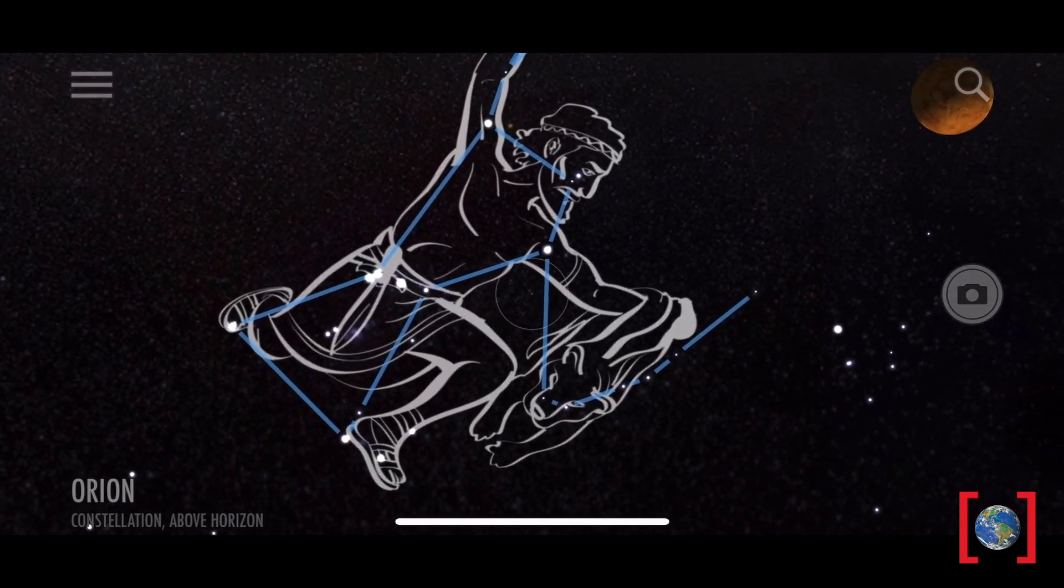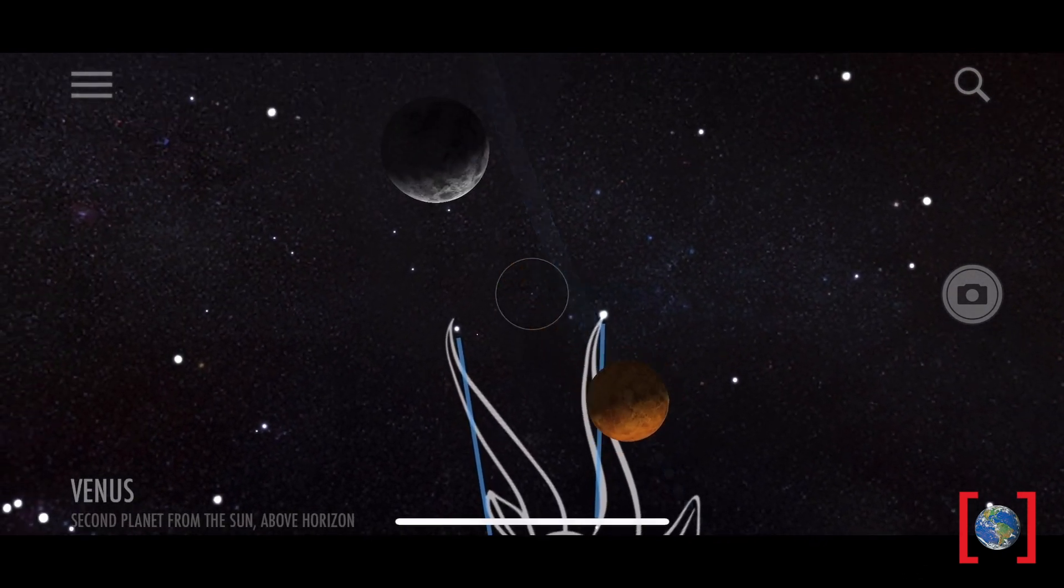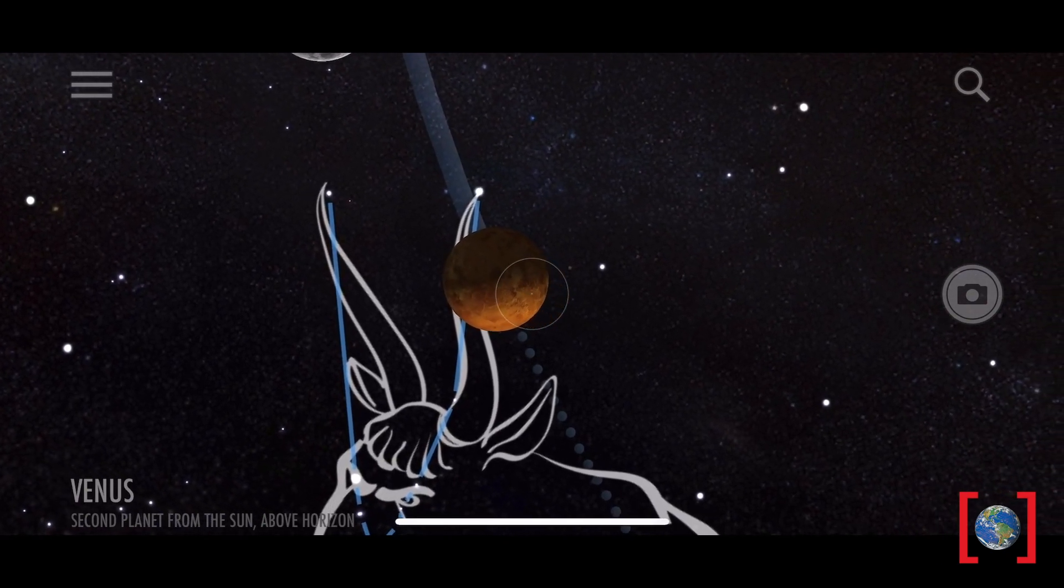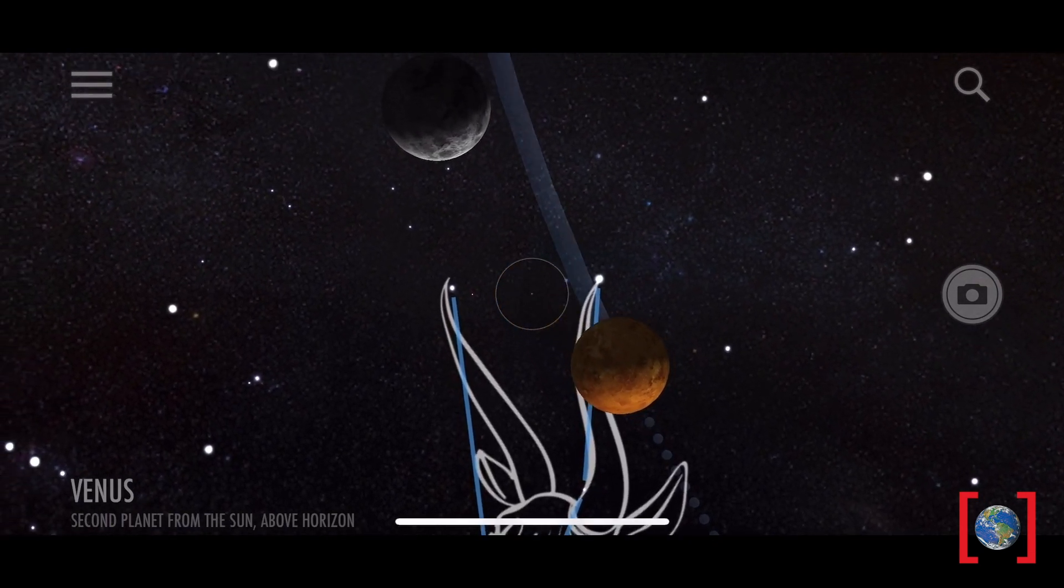If we keep going, we'll find Venus. Venus is close to our moon right now. And Venus is one of the brightest things in our night sky besides the moon itself. Sometimes you can even see Venus before the sun completely sets.